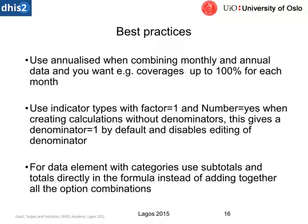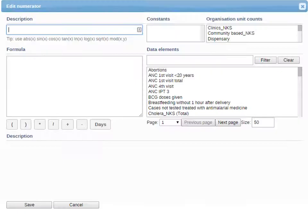For data elements with categories, when you go into the indicator screen you can use subtotals and totals that are directly available within the system. This is why categories are so useful when creating data sets — they automatically give us the subtotals for those categories when we're creating indicators, allowing us to be much more specific, which was one of the key qualities we wanted.